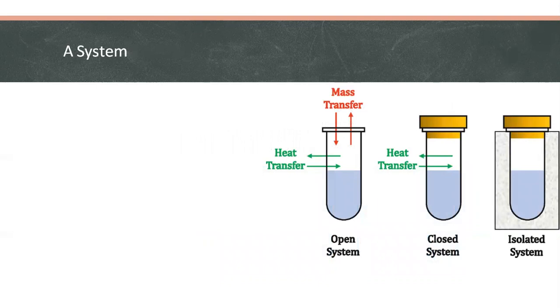A system is the specific portion of the universe that is being studied. Everything outside the system is considered the surroundings or environment.